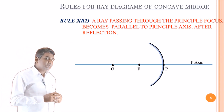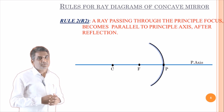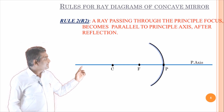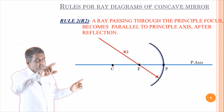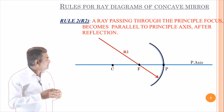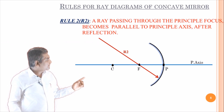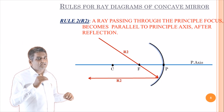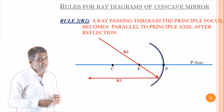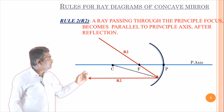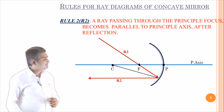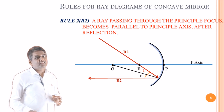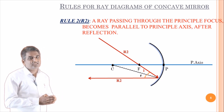Coming to the second rule R2: a ray passing through the principal focus becomes parallel to the principal axis after reflection. Let us consider a light ray passing through the focal point — after reflection it becomes a parallel ray, parallel to the principal axis. This is because, again, if you draw the normal at the point of incidence, it satisfies the laws of reflection — angle of incidence equals angle of reflection.